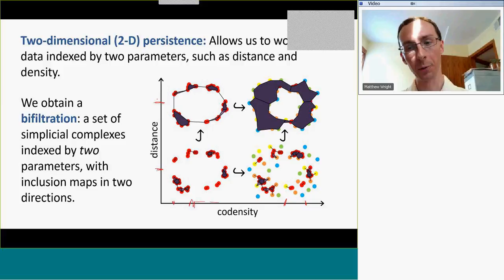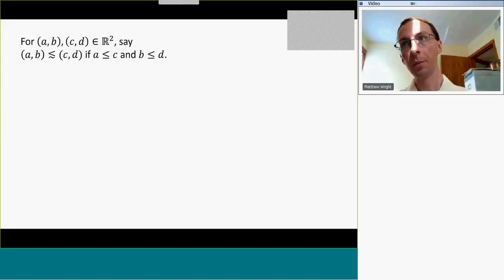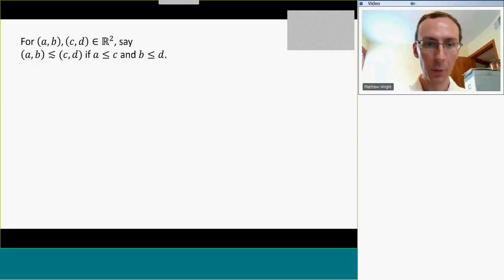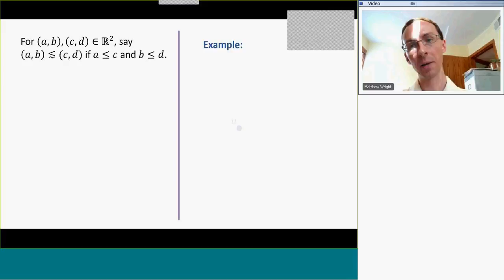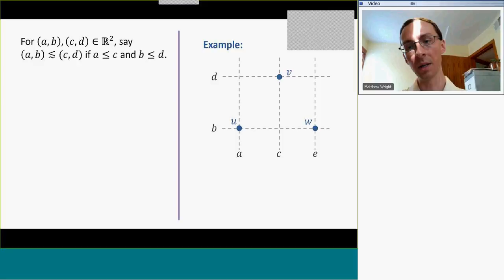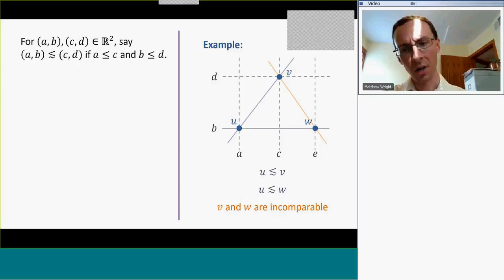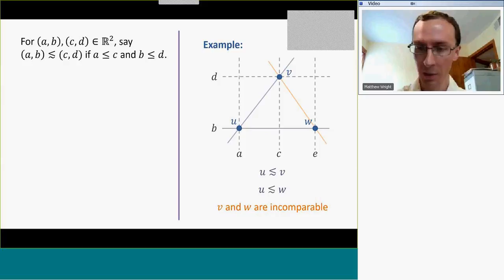So this is going to be about a bi-filtration. I'll say something about a partial order on R². If I have any two points in R², say (A,B) and (C,D), I say that (A,B) is less than or equal to (C,D) if both A ≤ C and B ≤ D. For example, if I take three points U with coordinates (A,B), V with coordinates (C,D), and W with coordinates (C,D), then in this case U ≤ V and U ≤ W, but V and W are incomparable. Points are comparable if they lie along a line of non-negative slope, but the line connecting V and W has negative slope, so they're incomparable in this partial order on R².